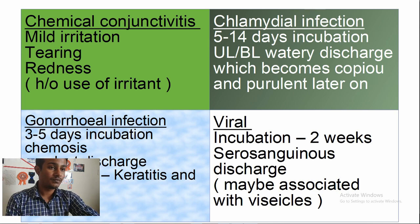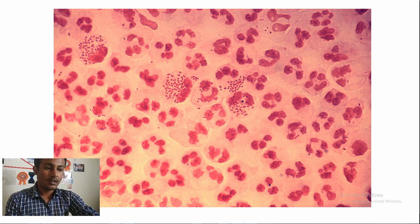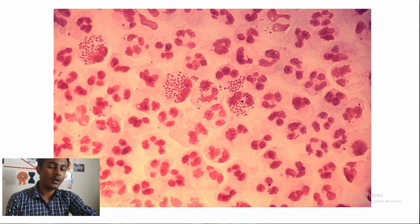Looking at this blood smear, you can see lots of neutrophils, and within the neutrophils you can see diplococci — which means the diagnosis would be gonorrhea.